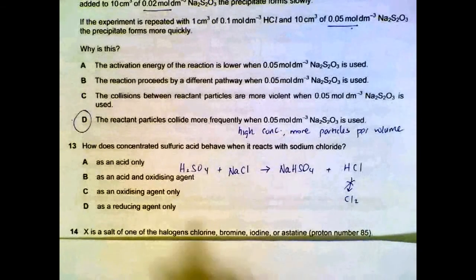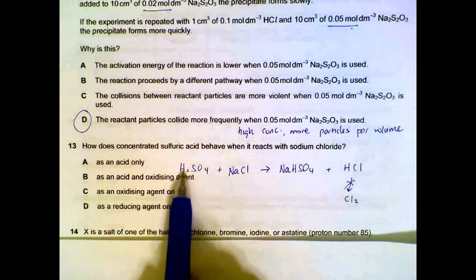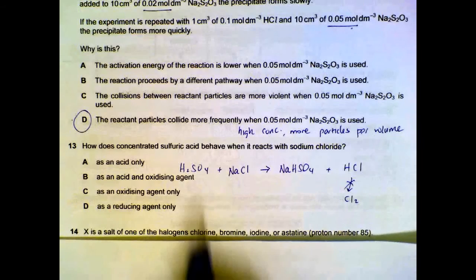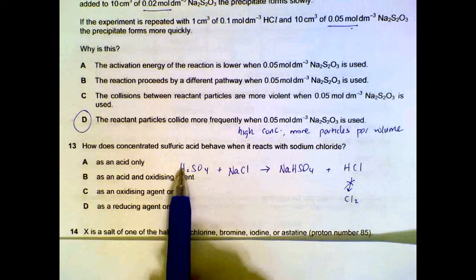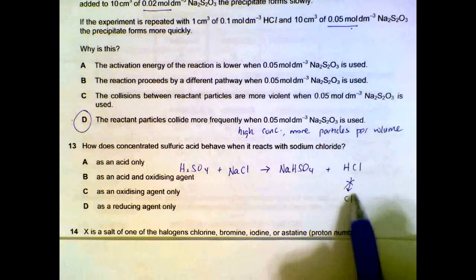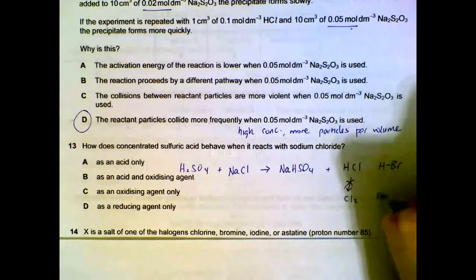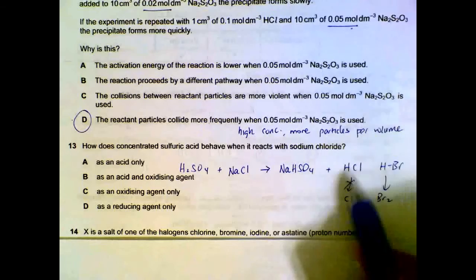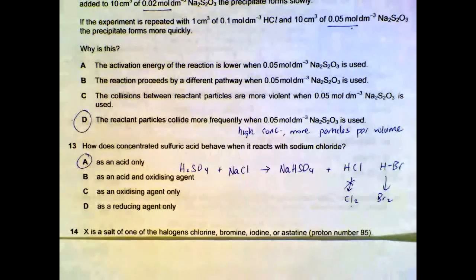Number 13. Concentrated sulfuric acid and sodium chloride. When they react, the concentrated sulfuric acid actually donates a proton to your NaCl. It is a proton donor, so it is behaving like an acid. It forms HCl, which doesn't go to Cl2. Unlike your HBr or HI that goes to Br2 and I2, for HCl it doesn't go to Cl2, so there's no redox reaction happening subsequently. So there's only it behaving like an acid.